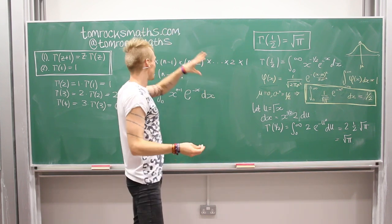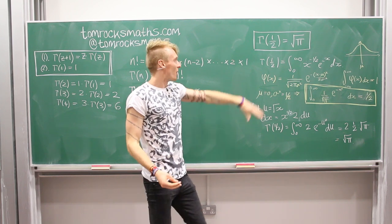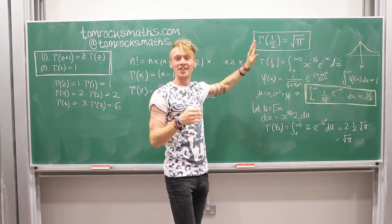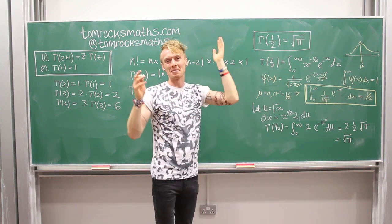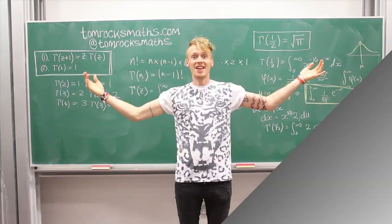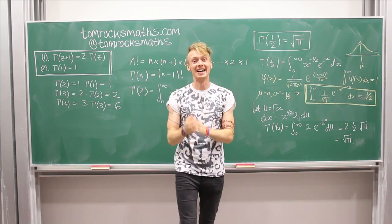And so going from factorials and complex numbers and then just throwing in a half, you actually get back to this irrational number pi which just appears everywhere. Can't get rid of it, it just pops up everywhere in all branches of maths. So there you have it, a whirlwind tour of the pretty amazing gamma function.